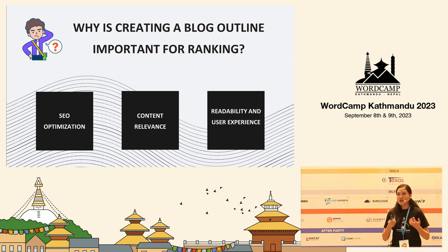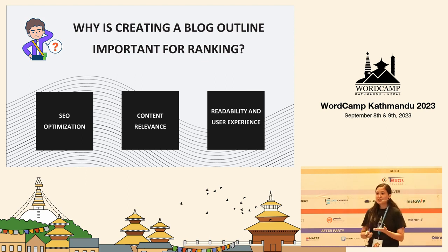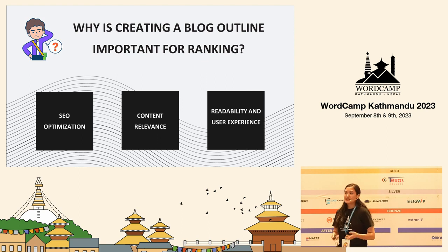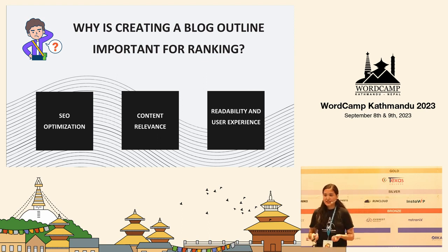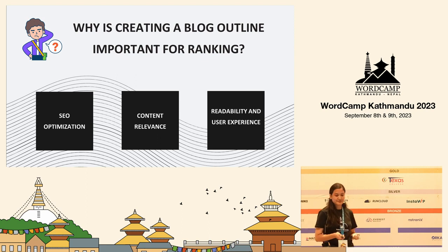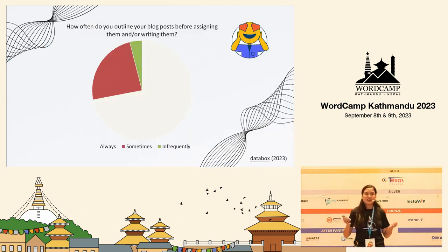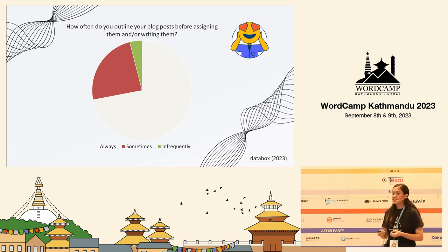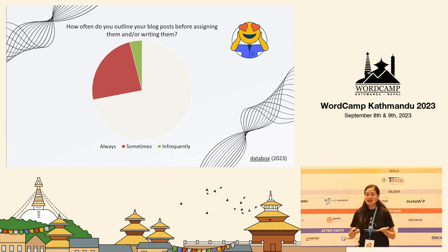Lastly, when you create a blog outline, you are able to figure out the major things that you will include in your article. This will make your content organized and structured, improving the readability and user experience, which is also a plus point for ranking. Here I have included one statistic where you can clearly see that most bloggers are creating blog outlines for their blog posts, which shows the importance of creating blog outlines.